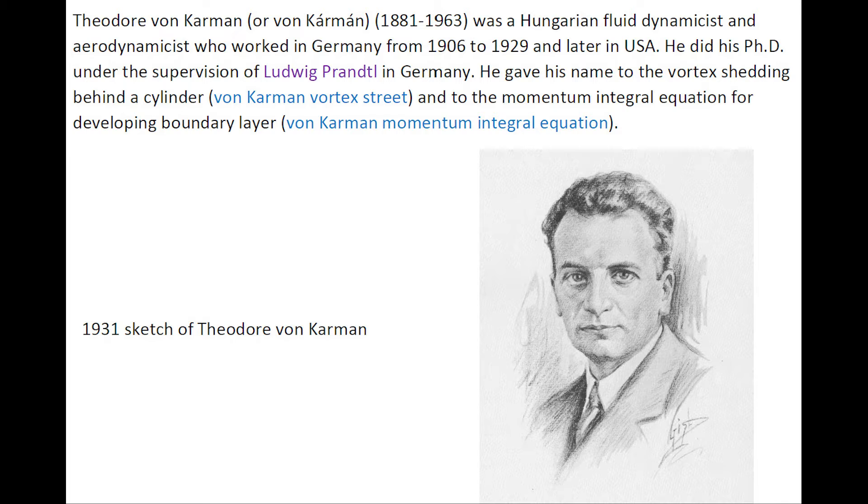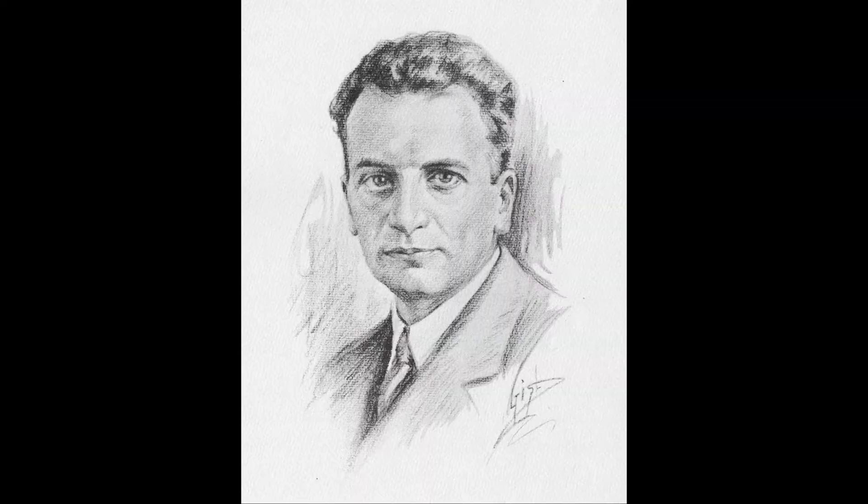Theodor von Kármán was a Hungarian physicist who worked in Germany between 1906 to 1929 and later in USA. He was the first PhD student of Ludwig Prandtl at the University of Göttingen.